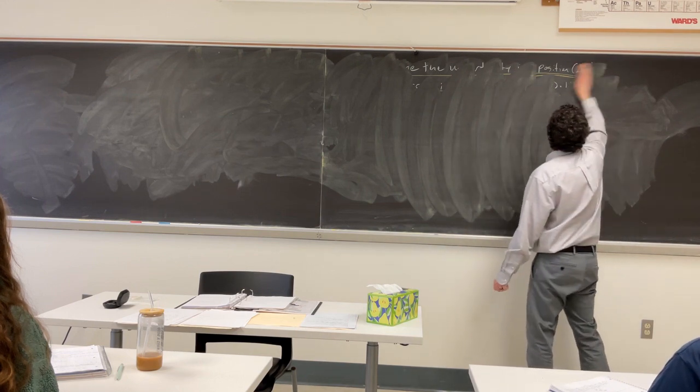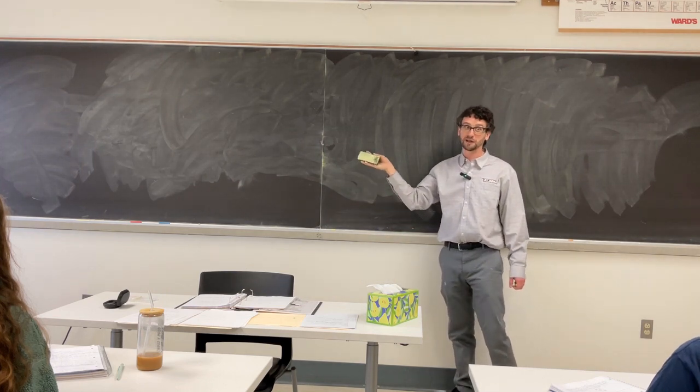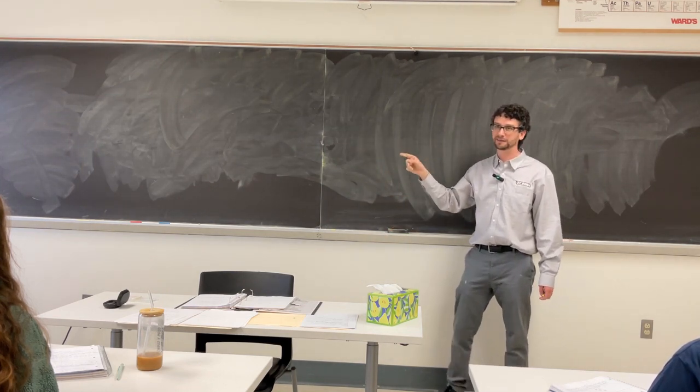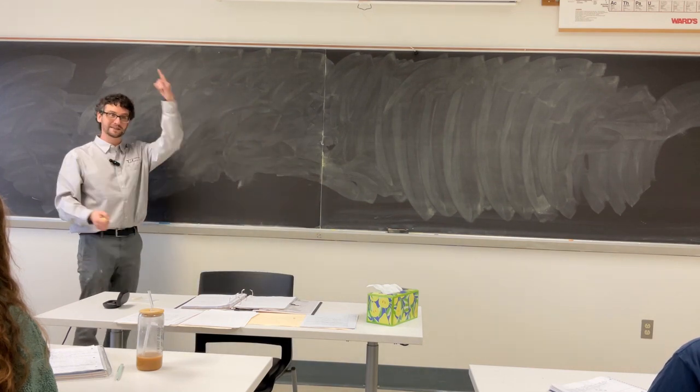So, one of the flaws with the Bohr model of the atom is the electron can't stay in that orbit, it violates the uncertainty principle. It would just shoot really fast to the point where it could just escape.